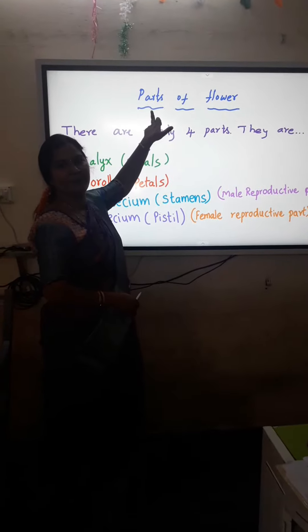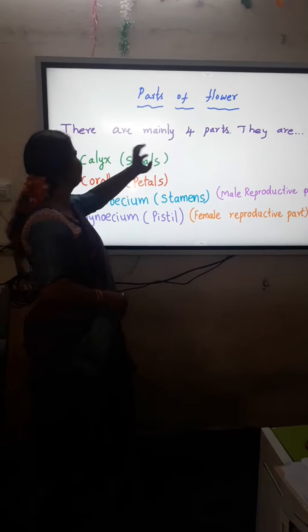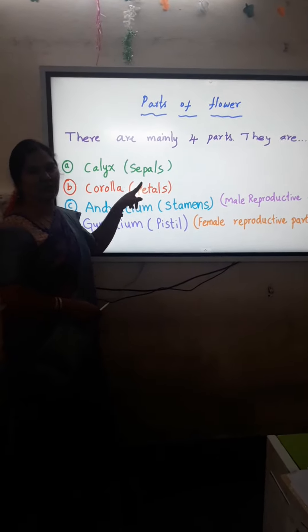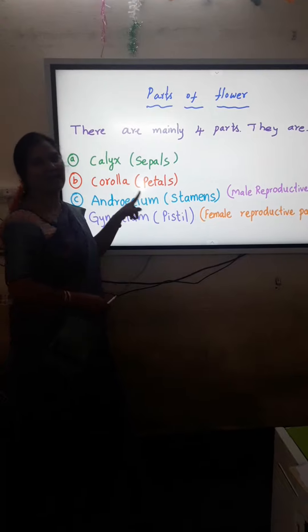Parts of flower. There are mainly four parts in a flower. They are calyx, we call them sepals, corolla, we call them petals.